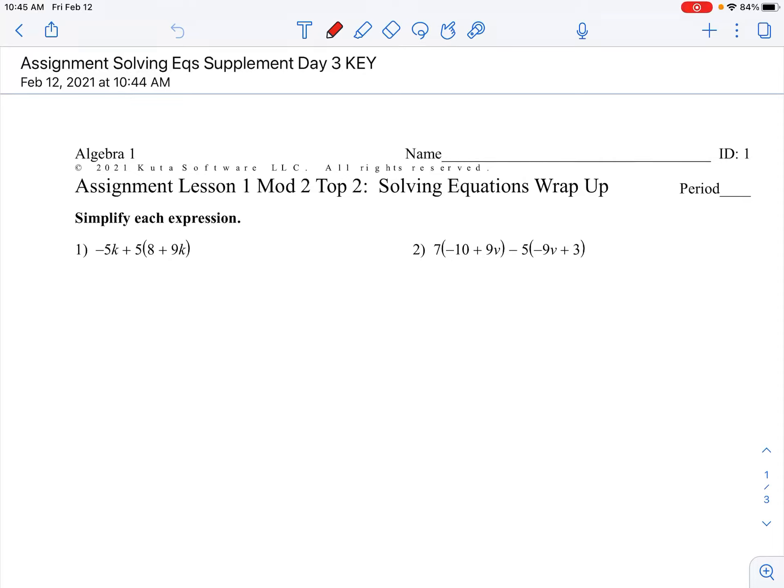Okay, number one and two, simplify the expression. So got parentheses, so I'm going to start by distributing that five. That negative 5k comes on down, 40 plus 45k. After I distribute, combine like terms, watch your signs. Negative 5 plus 45, and that 40 has nothing else to combine with it. That's as best as we can do.